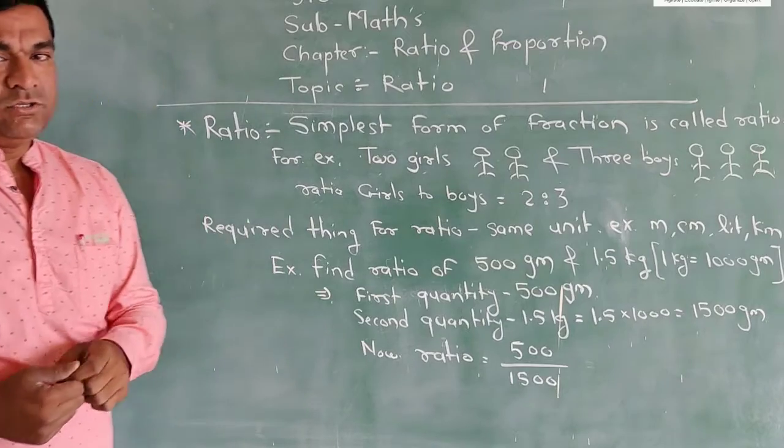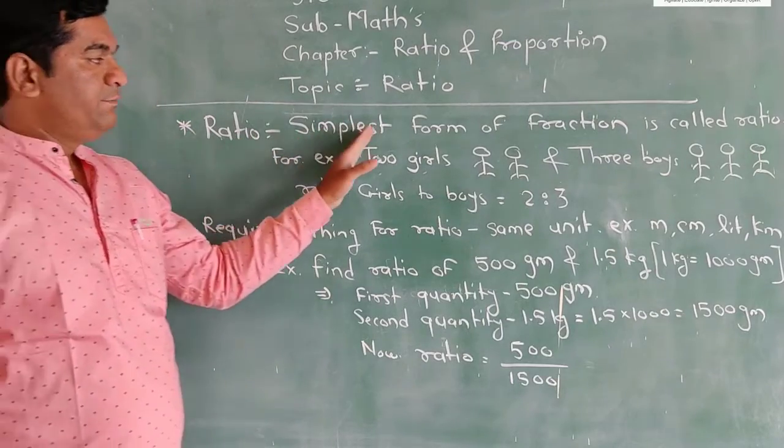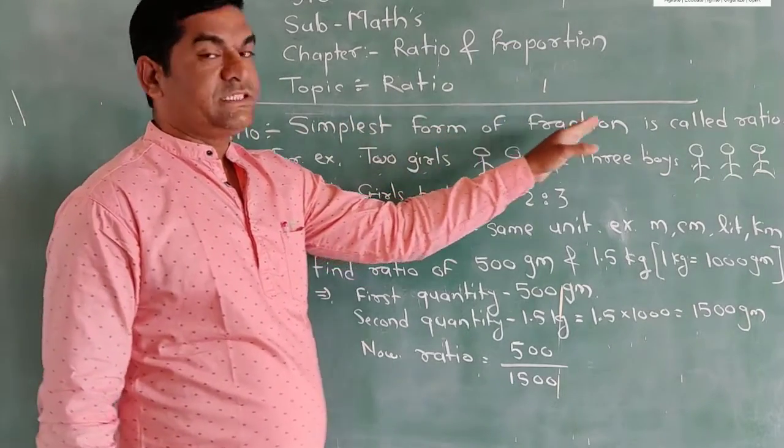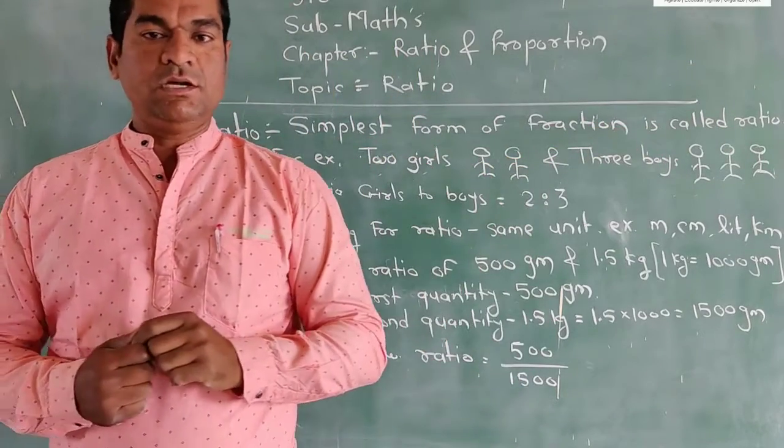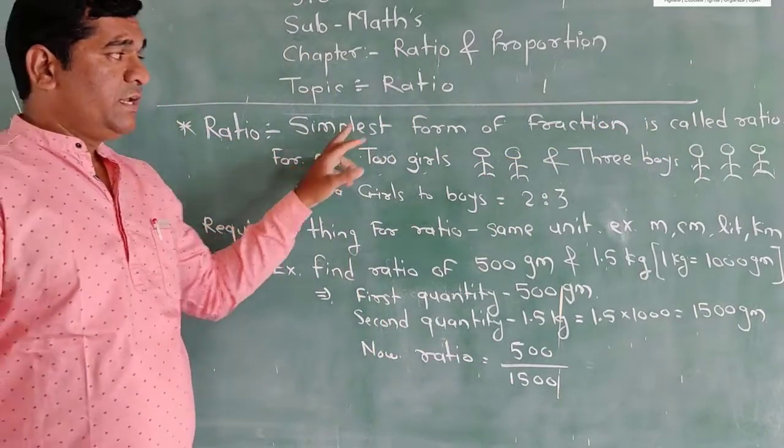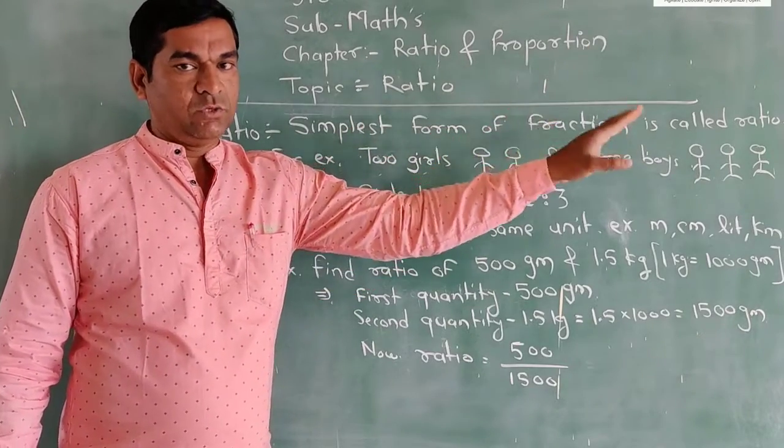First, we find what is the ratio. The ratio means the simplest form of a fraction is called ratio. Once again, repeat the definition of the ratio: the simplest form of a fraction is called ratio.